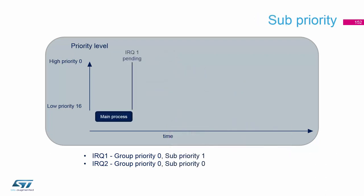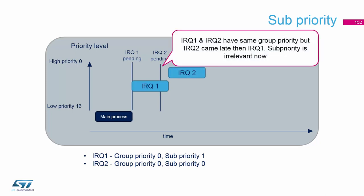The sub-priority is something different. In case we have two interrupts with the same group priority — same preemption priority — but they have different sub-priority: if IRQ1 came first, then IRQ2 came, the core doesn't preempt because the preemption priority is the same. We wait after interrupt 1 execution ends and then we start executing interrupt 2.